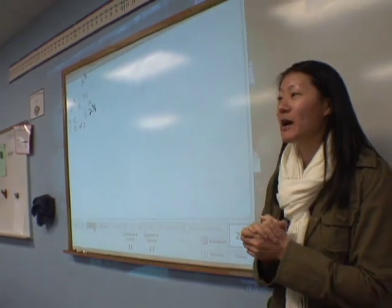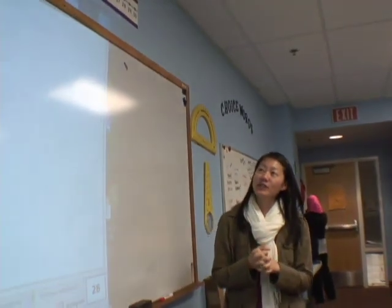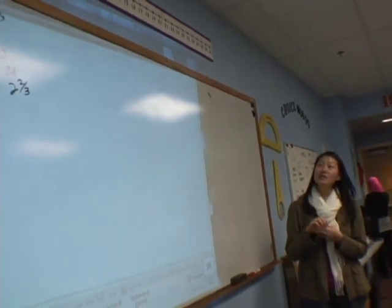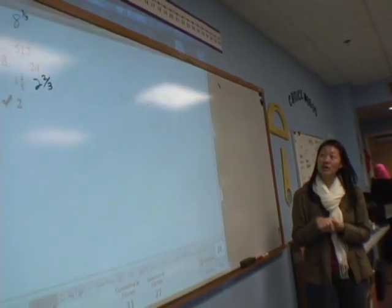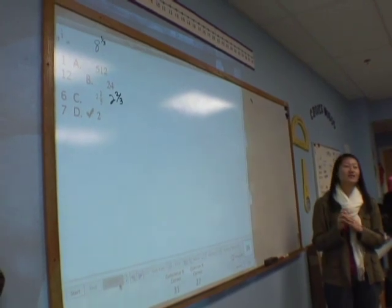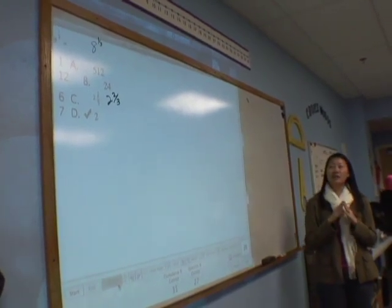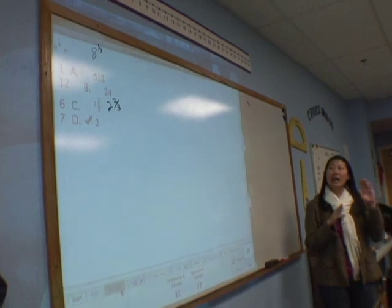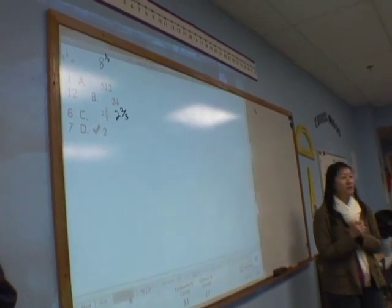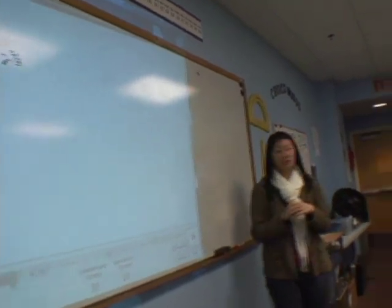Let's talk about this. Let's look at this problem together. It says A to the one-third power and A is 512, B is 24, C is 2 and 2 thirds, and D is 2. I heard somebody out there say A is too big. Why is A too big? Pedro, tell me why is A too big?